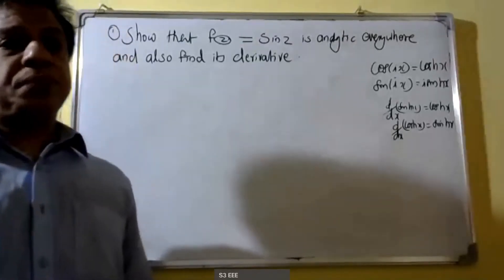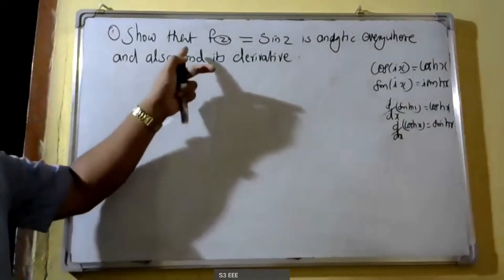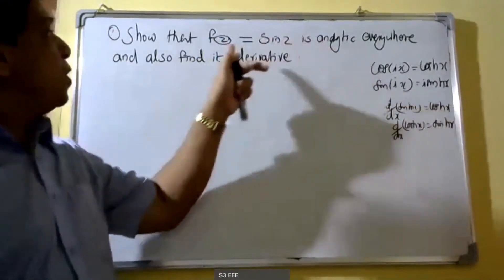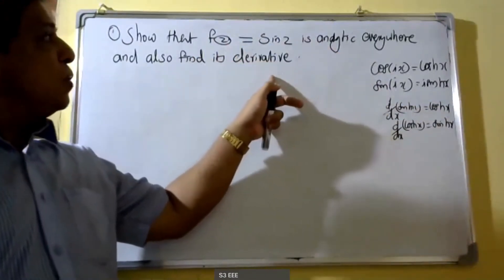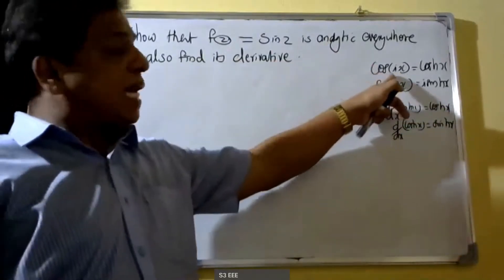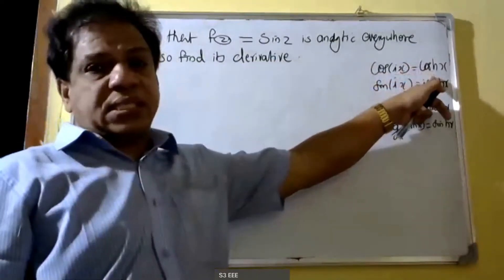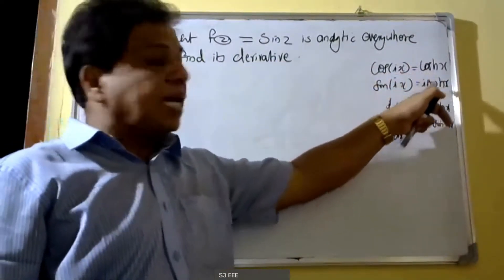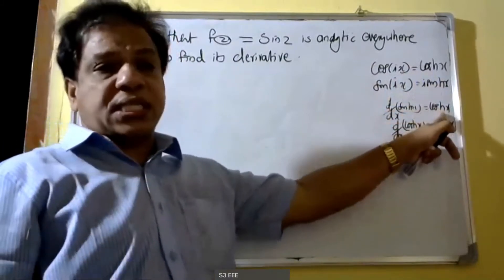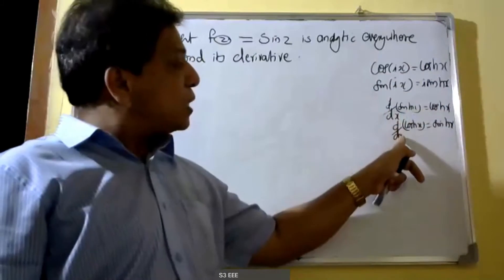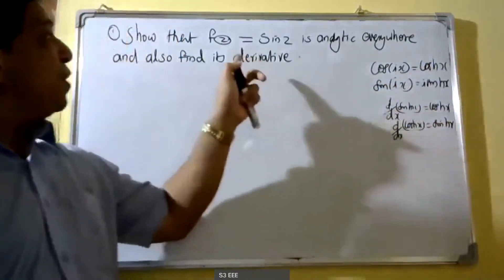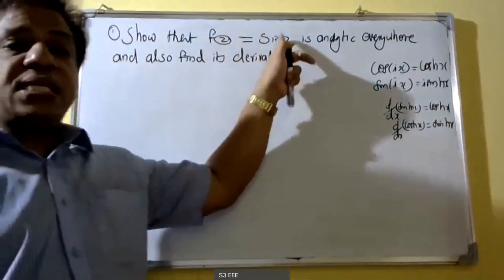Good morning students. Today we will show that f(z) = sin(z) is analytic, and also we have to find out its derivative. For this we should remember these formulas: cos(ix) = cosh(x), sin(ix) = i·sinh(x), d/dx of sinh(x) = cosh(x), and d/dx of cosh(x) = sinh(x). By using these formulas we can easily verify that f(z) = sin(z) is analytic.